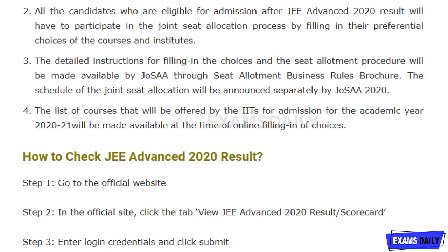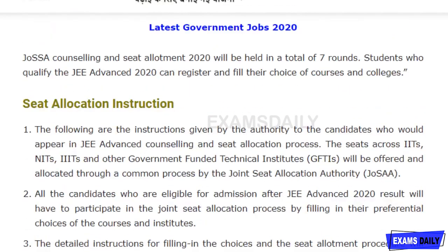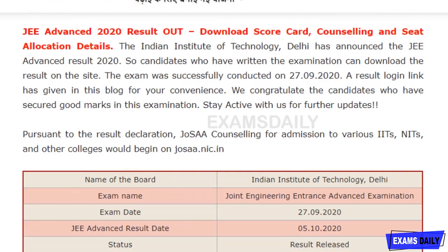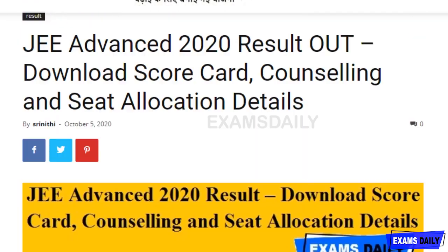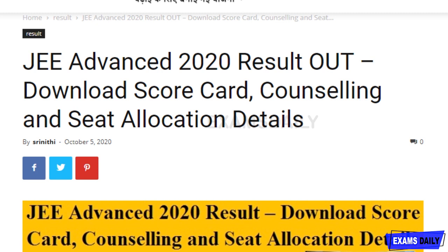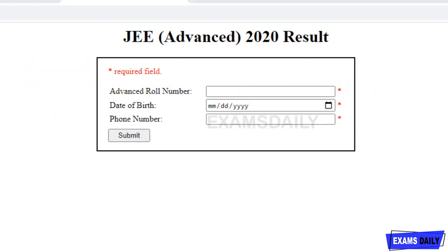Now I will explain how to check the JEE Advanced 2020 result. First, you have to go to the official website of JEE — the official link has been given in the description box. Next, click on the advertisement named 'JEE Advanced 2020 Result.' When you click it, you will get a home page — this is the home page. For your convenience, we have also provided the direct login link in the description box.